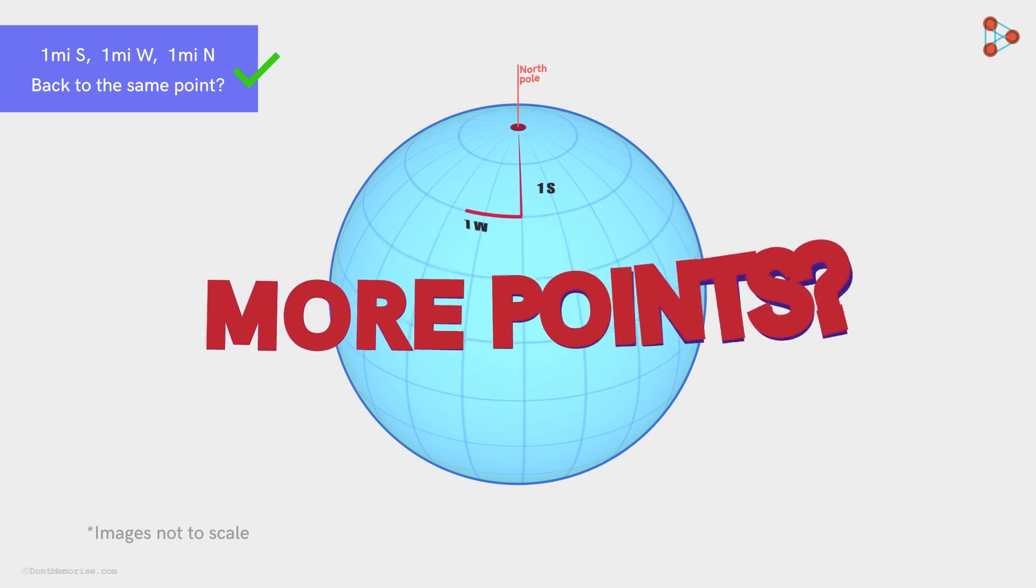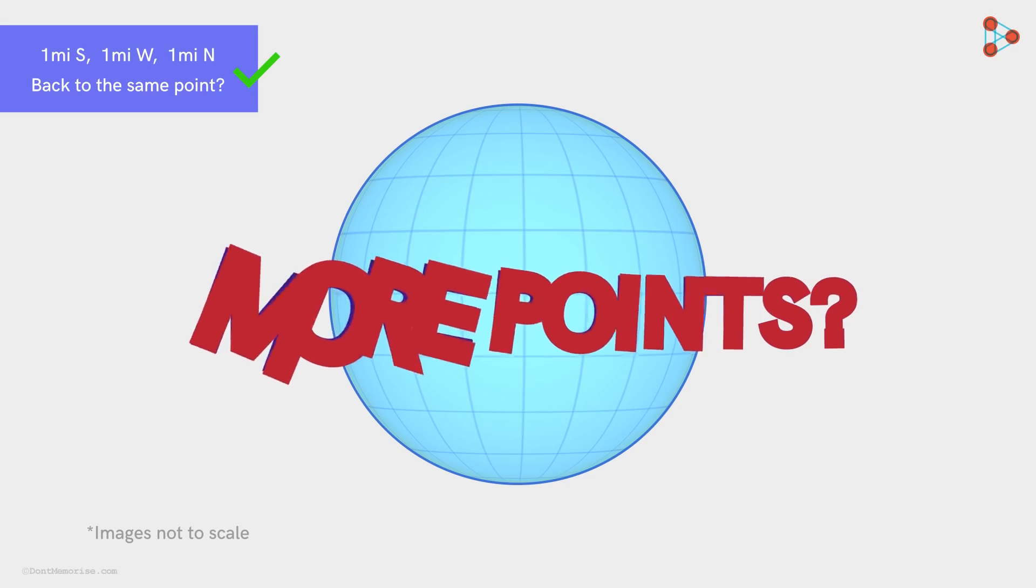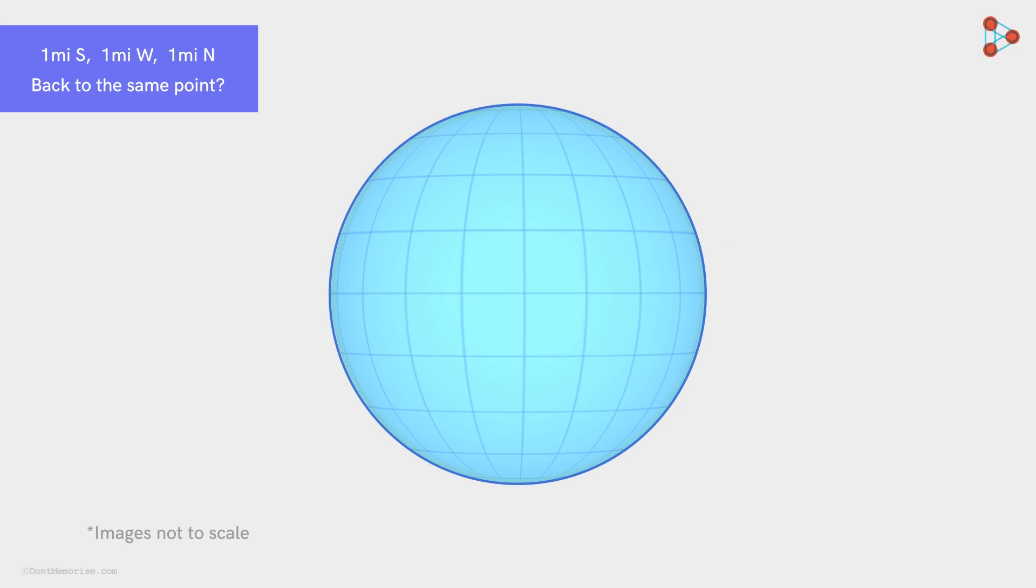Can you think of more such points? There is a class of points we haven't included in the solution. To find them, let's understand the problem's core movements and logic. We see that the directions north and south can cancel each other out. If we go one mile south and one mile north, we reach the same point. However, the distance we travel in the west direction is not allowing us to do so.